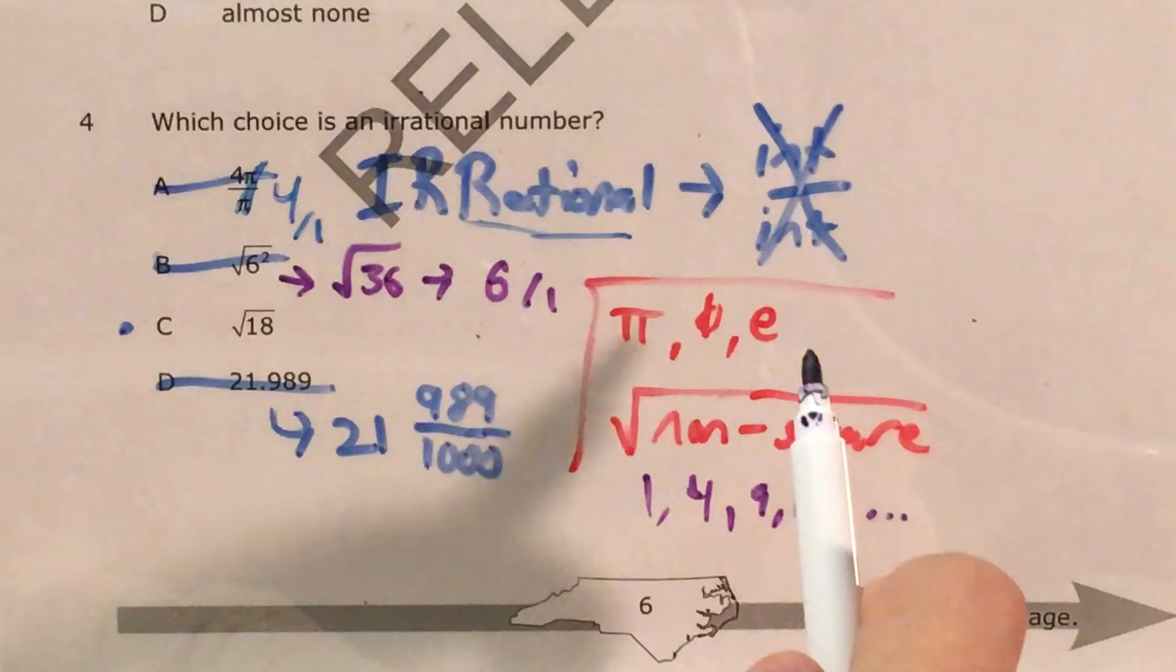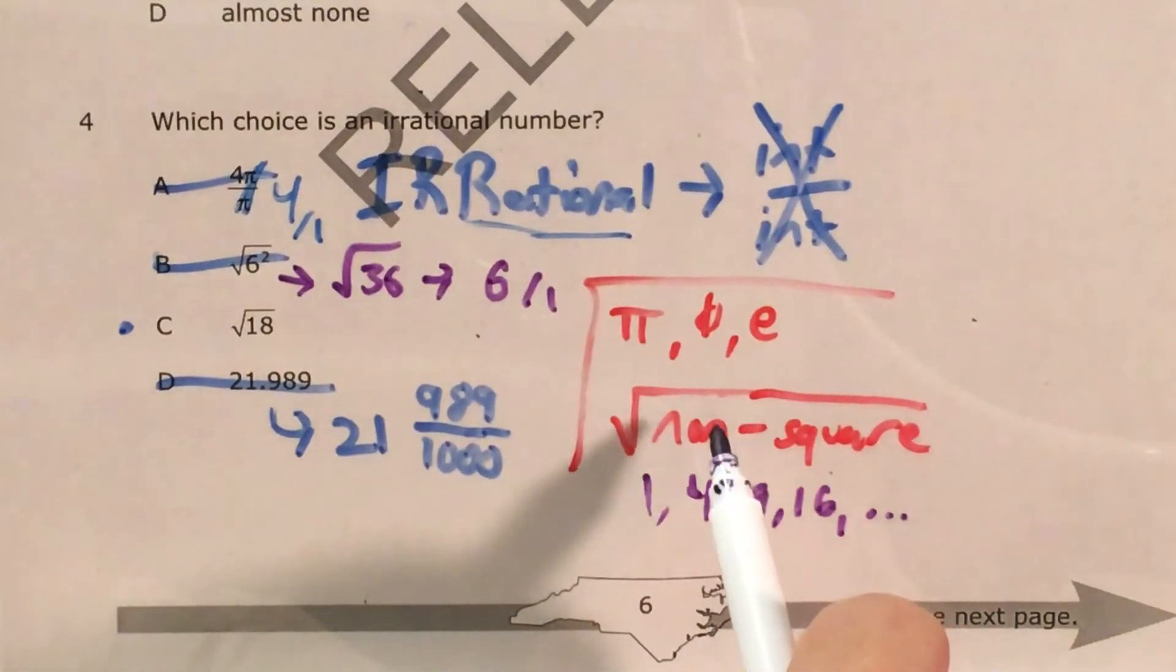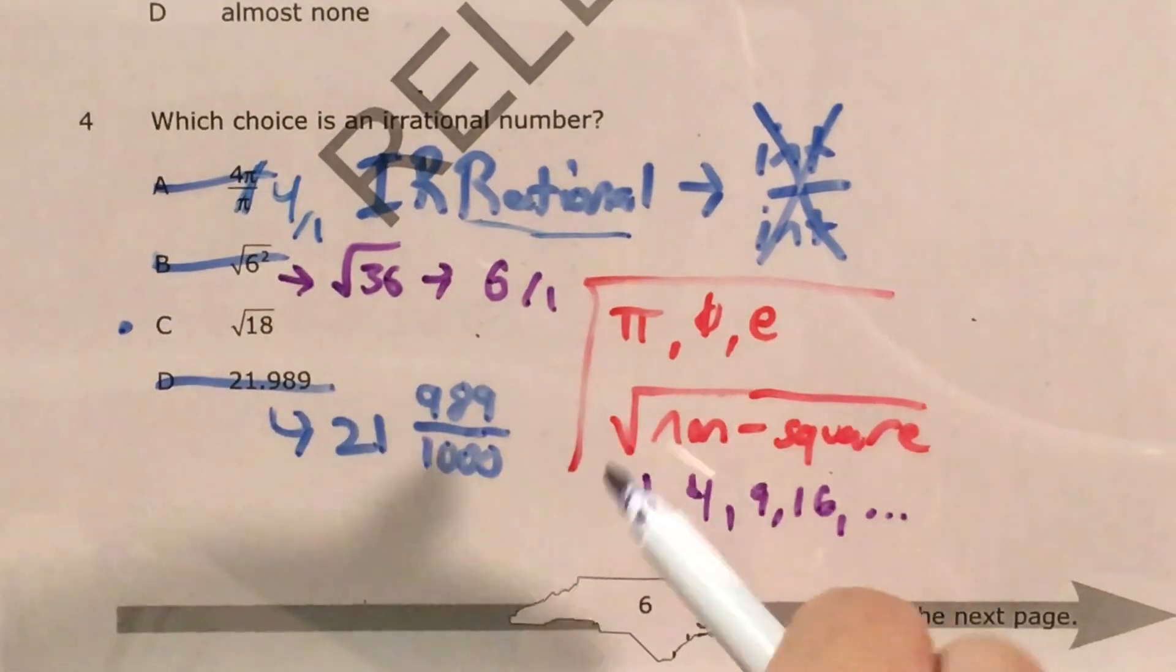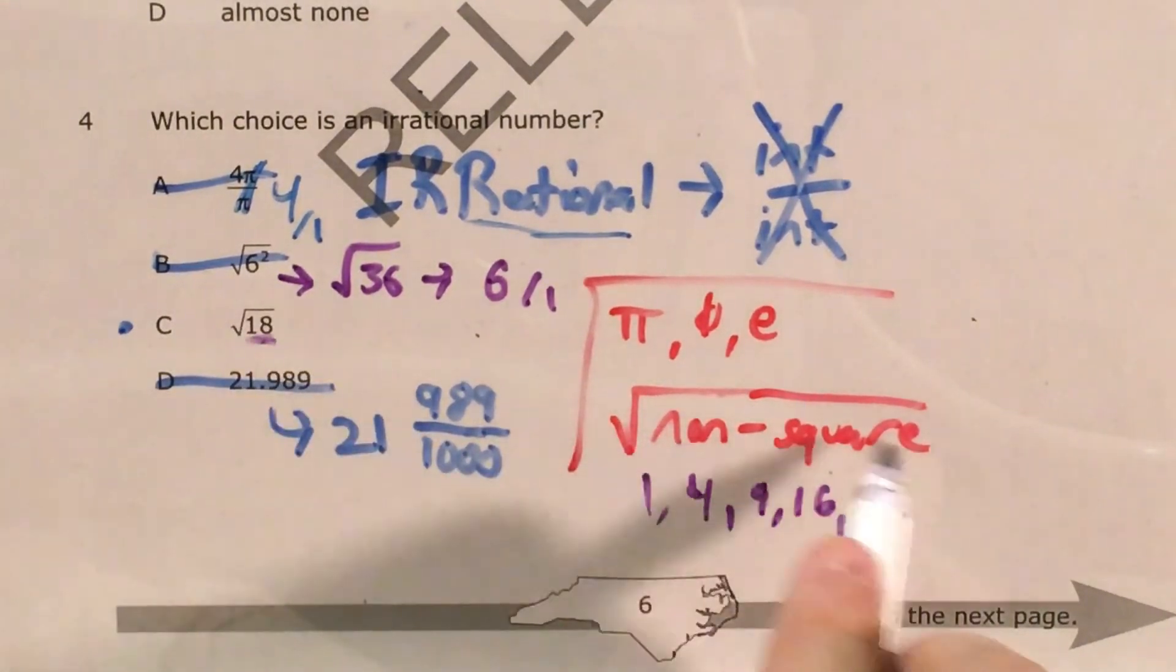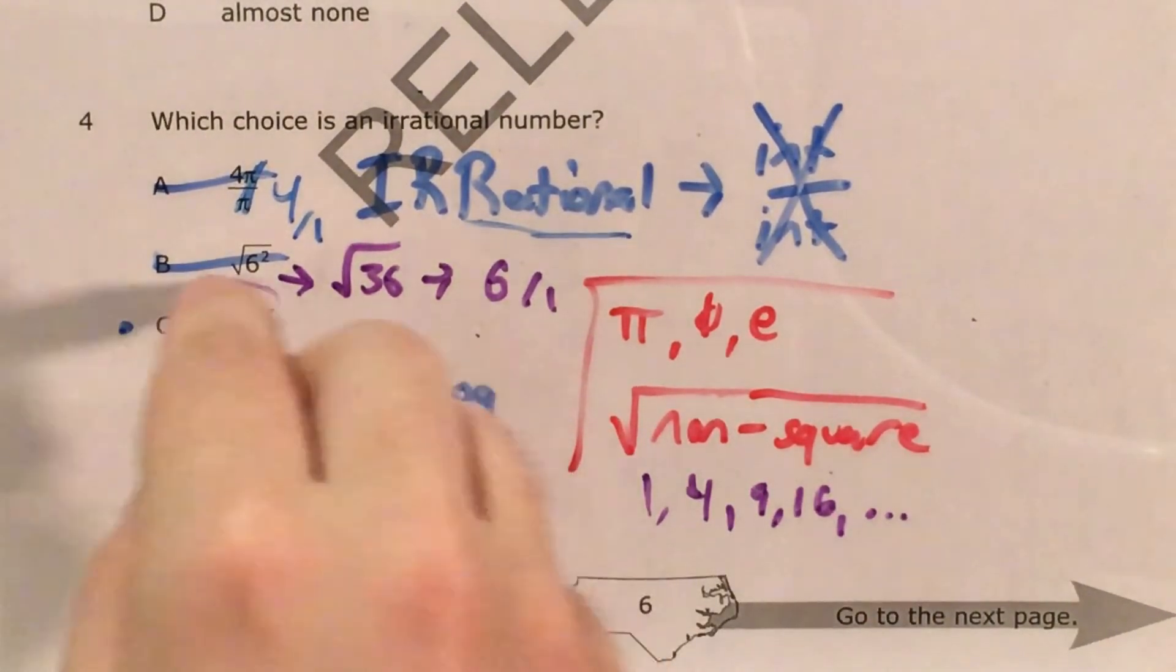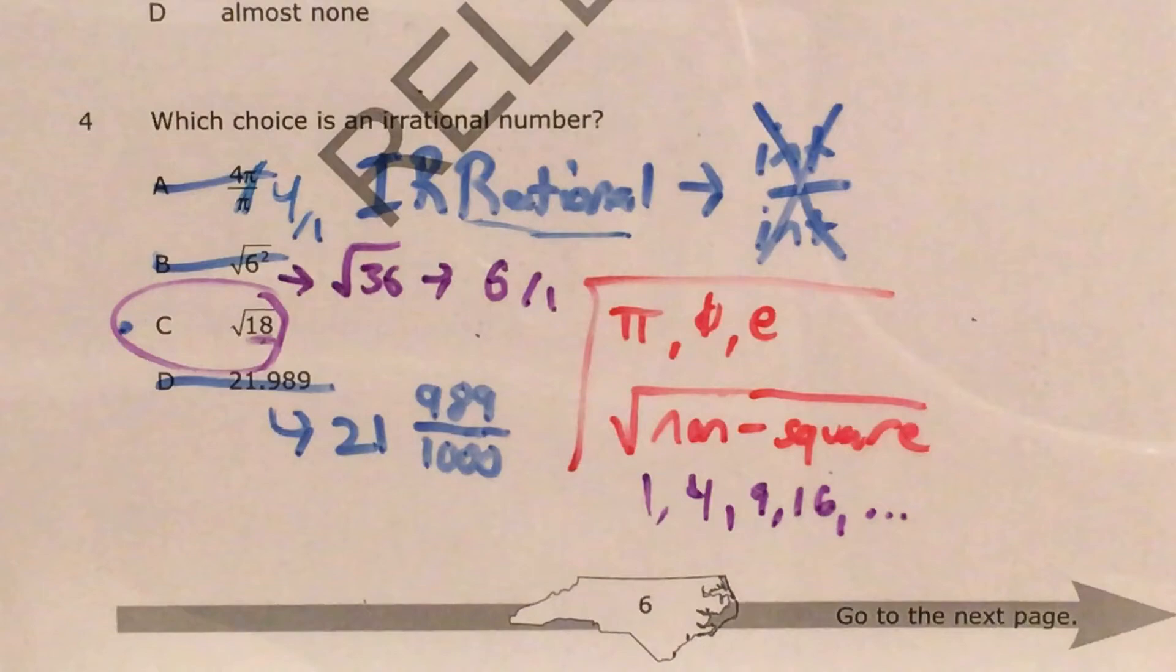Square roots of positive numbers and zero will either give us integers, or will either give us whole numbers, or they're going to give us irrational numbers. Since the number 18 underneath this square root is not a square number, its square root is going to be irrational.